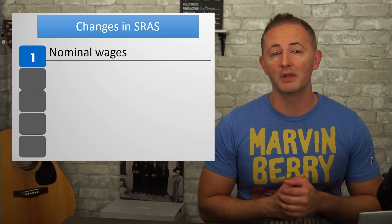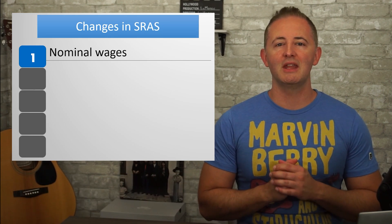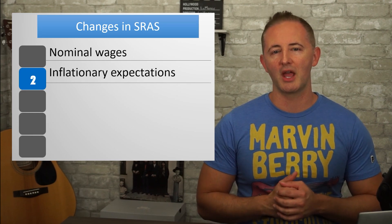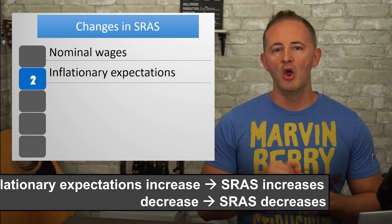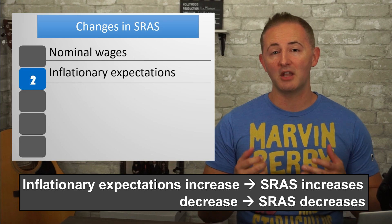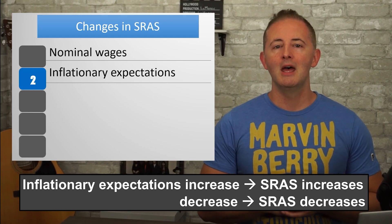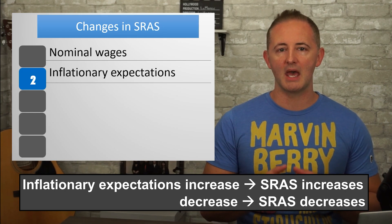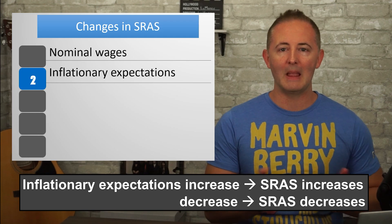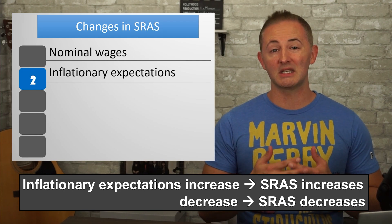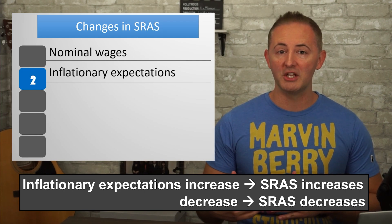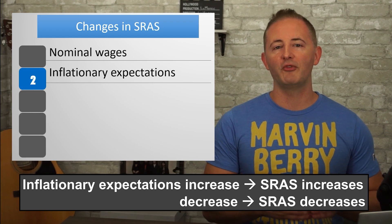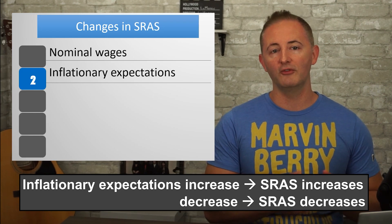Secondly, and pretty similarly, changes in inflationary expectations also shift the SRAS curve. When people and businesses expect higher inflation, nominal wages increase, and this shifts the SRAS curve leftward. If people and businesses expected lower inflation, we would see nominal wages fall, and that would shift the SRAS curve to the right.